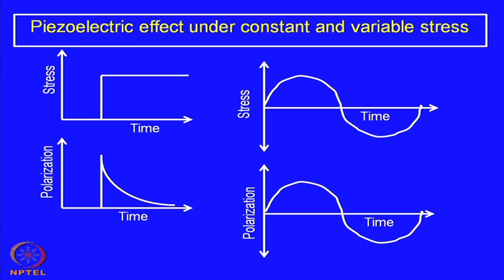Piezoelectricity is basically a dynamic process — you have to continuously vary the stress to get a continuous voltage. Most of the time, we apply a sinusoidal stress, as in vibrations. When vibrating, there is a positive stress (compression) and then tension, or tension followed by compression. Under that condition, you get a development of polarization or voltage that is in phase with the applied stress.